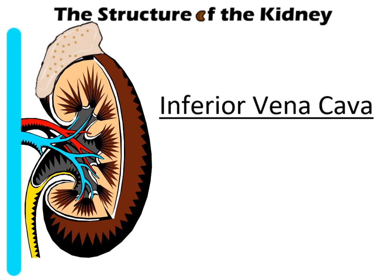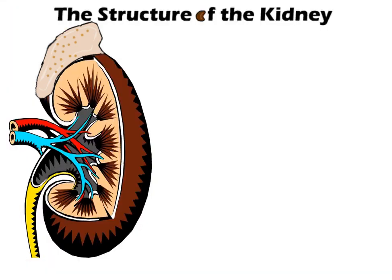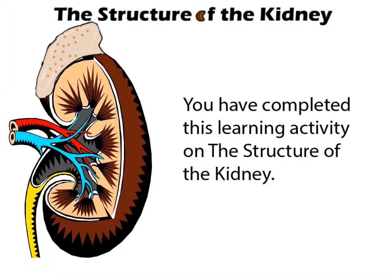Inferior Vena Cava: the main blood vessel that drains blood from the lower part of the body. You have completed this learning activity on the structure of the kidney.